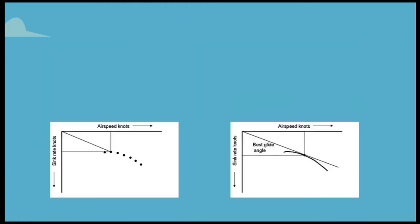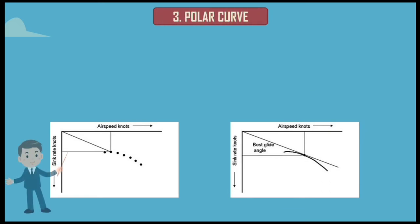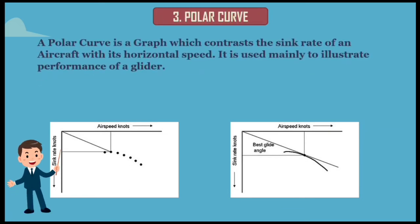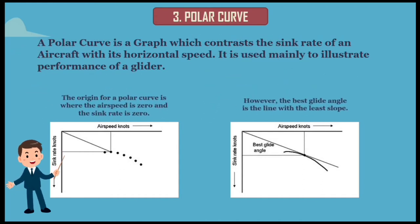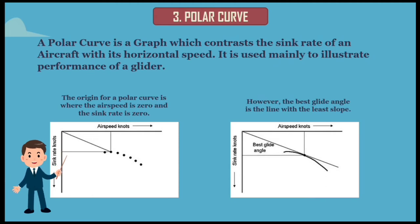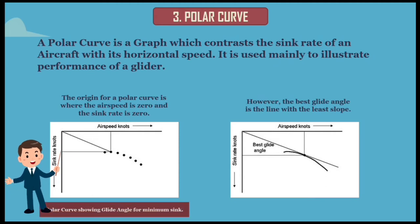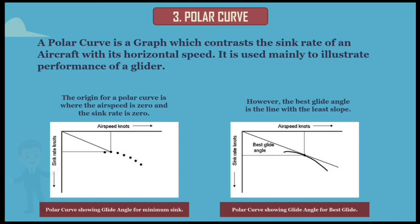Coming to the next topic: polar curve. A polar curve is a graph which contrasts the sink rate of an aircraft with its horizontal speed. It is used mainly to illustrate the performance of a glider. The origin for a polar curve is where the airspeed is zero and the sink rate is zero. However, the best glide angle is the line with the least slope. See this figure to get a clear idea.